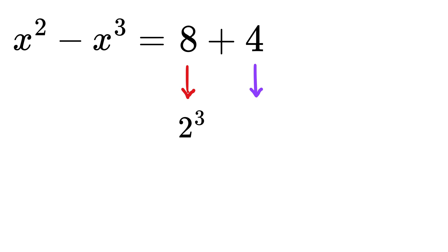And also, 4 is 2 times 2, or 2 squared. So, this 12 can be written as 2 squared plus 2 cubed. But we need a minus sign here and not plus.